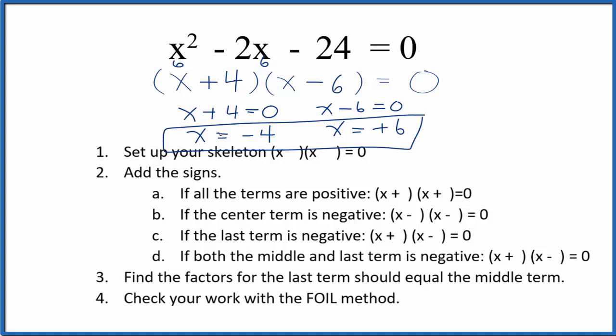If you use the quadratic equation you would get the same answer, just a little different way of doing it. This is Dr. B factoring the equation x squared minus 2x minus 24 equals 0. Thanks for watching.